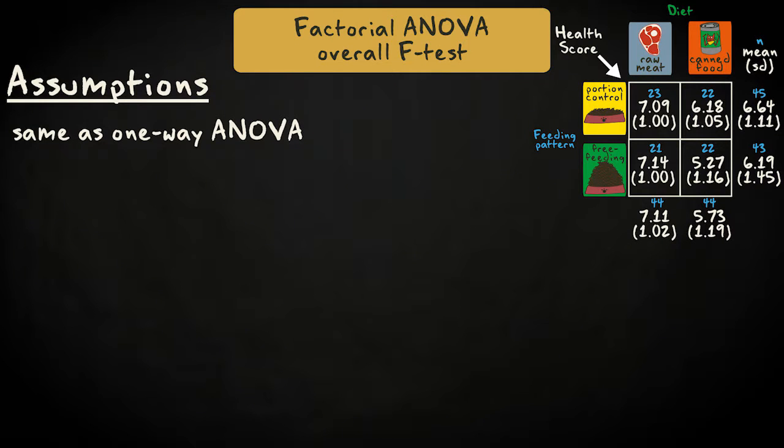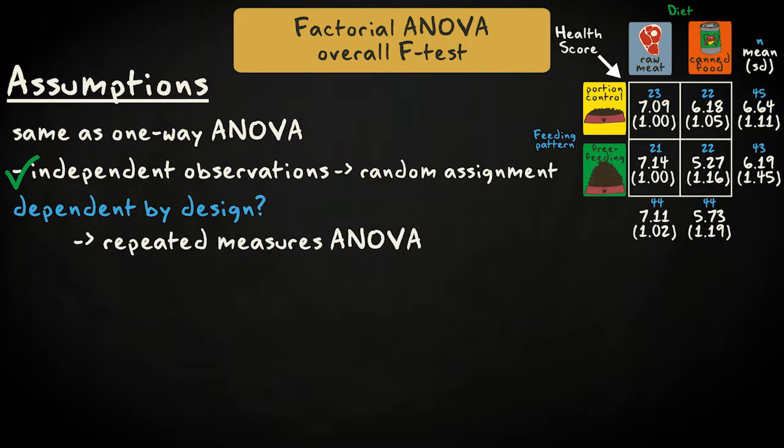First, we need to check the assumptions. These are the same as in one-way analysis of variance. The observations should be independent. In our case, random assignment takes care of this assumption. If the observations are dependent by design, involving repeated measurements or paired observations, we should use repeated measures analysis of variance.